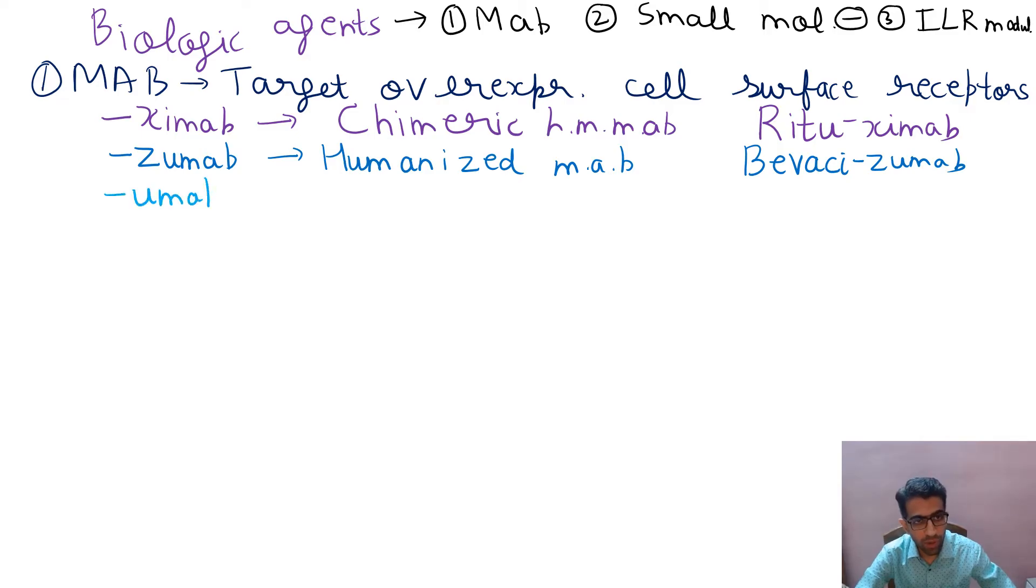And then coming on to the last one, that is umab. In umab there is only letter u and this is human monoclonal. What a difference, tell me in the comment section. This is denosumab.